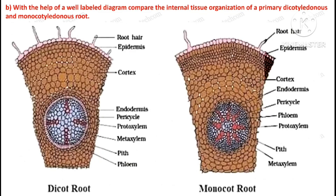Question number five: with the help of a well-labeled diagram, compare the internal tissue organization of a primary dicotyledonous and monocotyledonous roots.